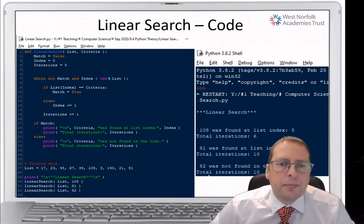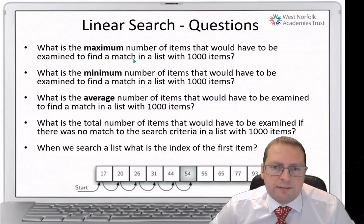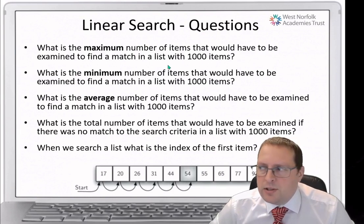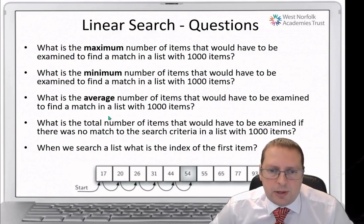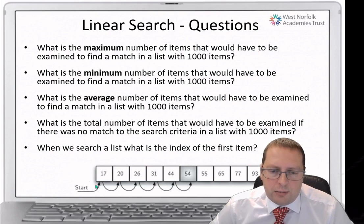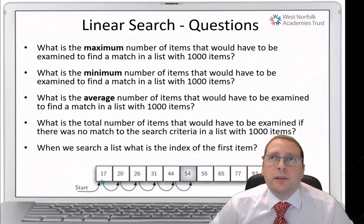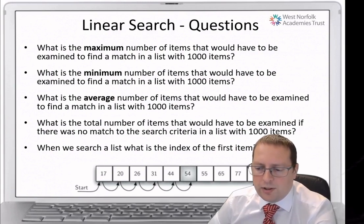So that is what a linear search is. Now we have our code for a linear search. For your ePortfolio questions: what is the maximum number of items that would have to be examined to find a match in a list with a thousand items? What is the minimum number? What is the average? What is the total number of items examined if there's no match? And when we search a list, what is the index of the first item called?